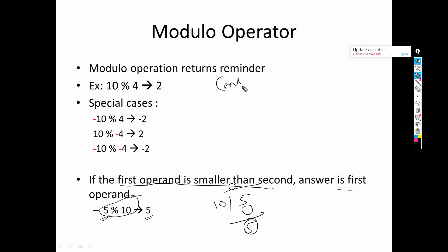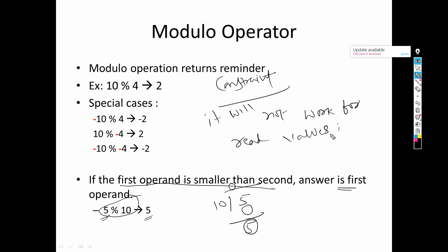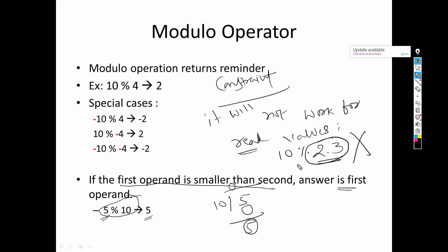There is one constraint of the modulo operator: it will not work for real values. For example, 10 modulo 2.3 will not work because 2.3 is a fractional number, not a complete integer. Since it is an incomplete number, modulo cannot work on it and will prompt an error. So modulo operator cannot perform operations on real or fractional numbers. This is all about arithmetic operators, specifically the modulo operator.